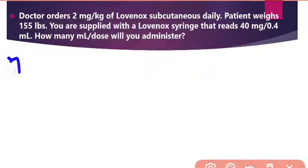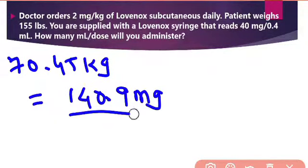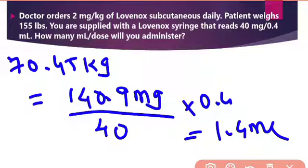When we convert 155 pounds, it comes to approximately 70.45 kg. If 1 kg requires 2 mg, then 70.45 kg requires approximately 140.9 mg, which is our desired amount. The amount on hand is 40 mg and the volume is 0.4 ml. When we calculate, we get an answer of approximately 1.4 ml. So we administer 1.4 ml of Lovenox subcutaneously to the patient.